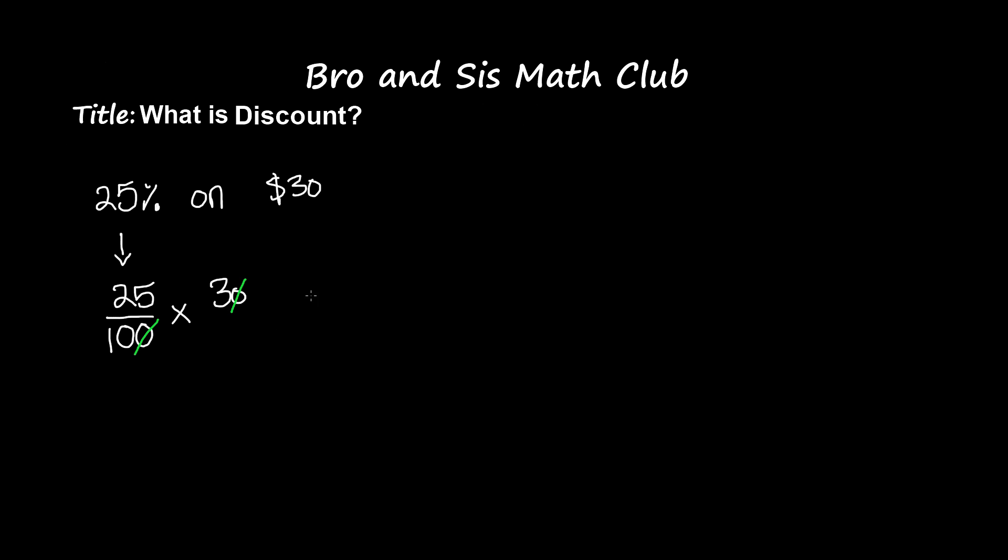with multiplying. So now my problem becomes 25 over 10 times 3. 25 times 3 becomes 75 over 10 because remember you always have to bring the 10 across as well.